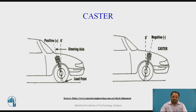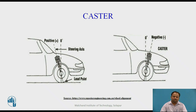The next type is caster. Caster is the tilt of the steering axis towards the front or rear of the vehicle. If the tilt is towards the front, it is taken as negative, and when it is towards the rear, it is taken as positive. Usually positive caster is provided to the vehicle. Caster is measured in degrees. Caster angle adjustment serves several purposes: to maintain directional stability and control, to increase steering returnability, and to reduce steering effort. These requirements can be met by providing positive caster.